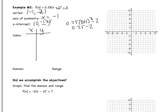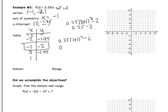Now I need to make my table. Remember that my vertex is going to go in the middle — two values down and two values up. I already substituted in 0 and got negative 1.75. Remember that a parabola is symmetric, so negative 1.75 is going to go on the other side as well. Now I need to substitute in 1: 0.25 times 1 plus 1 is 2, 2 squared is 4, and 1 fourth times 4 is 1, so I get 1 minus 2, which is negative 1. By symmetry, x equals negative 3 should also give negative 1.